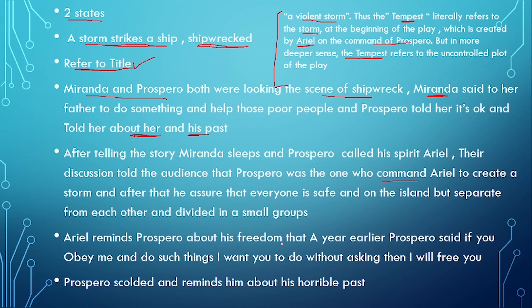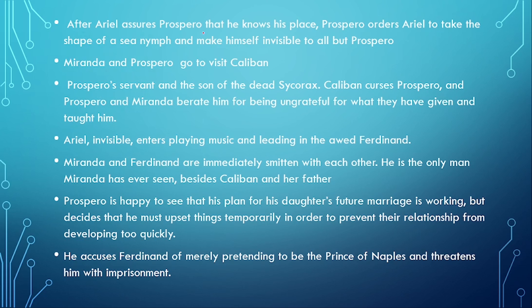Ariel reminds Prospero about his freedom. He says that a year earlier Prospero promised: 'If you obey me and do such things I want without asking, I will free you.' Now Ariel reminds Prospero of this promise. Prospero reminds Ariel of his past — how Prospero freed him. After Prospero reminds Ariel of his past, Ariel accepts his place.